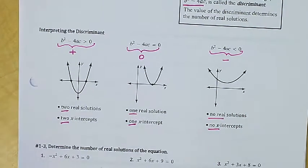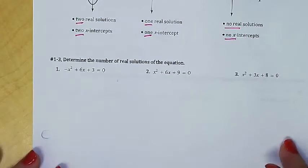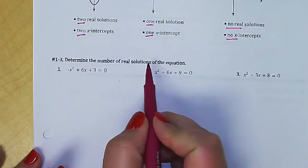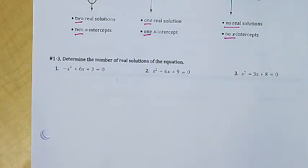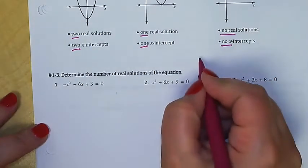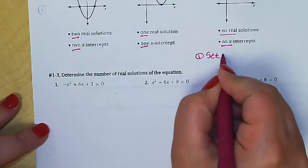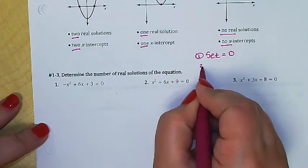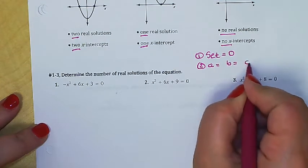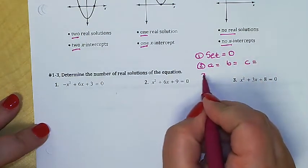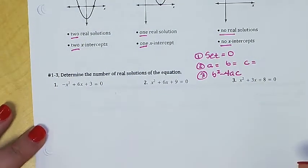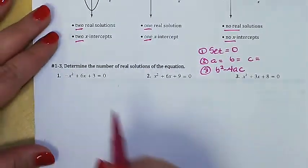If the problem says 'determine the number of solutions' — not 'solve the equation' or 'find the solutions' — we do not have to use the entire quadratic formula. The steps are: first, make sure the equation is set equal to zero; second, identify the values of a, b, and c; then plug those straight into the discriminant b²−4ac. You don't need the entire equation.